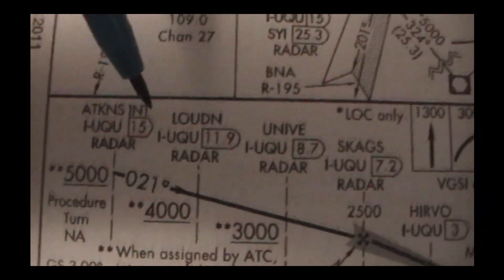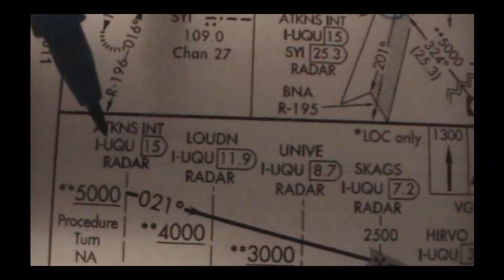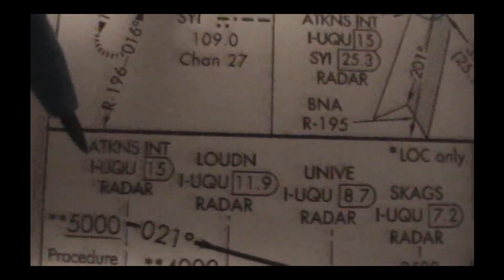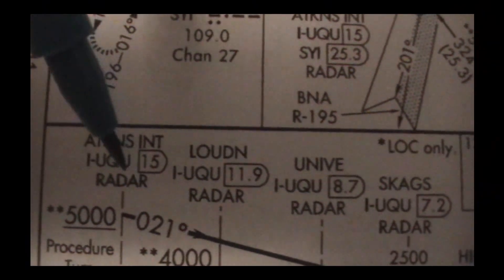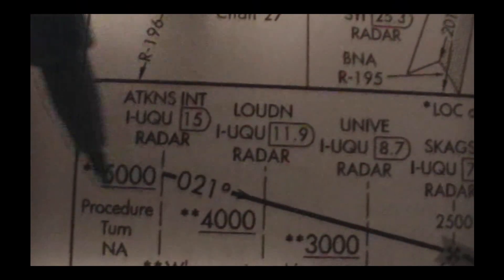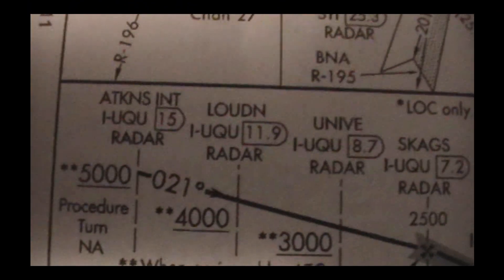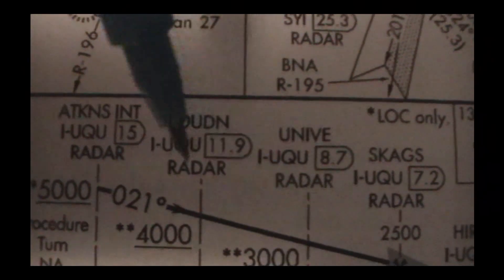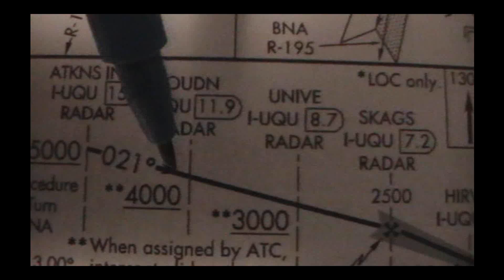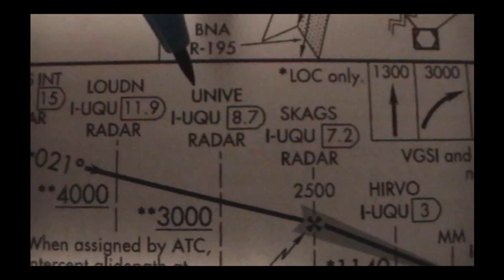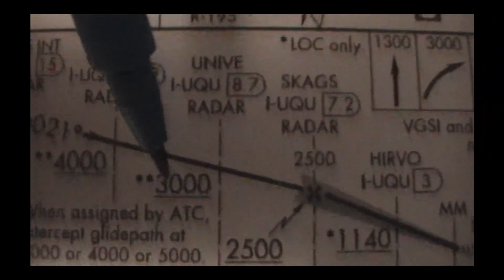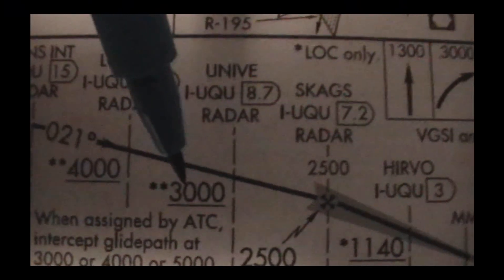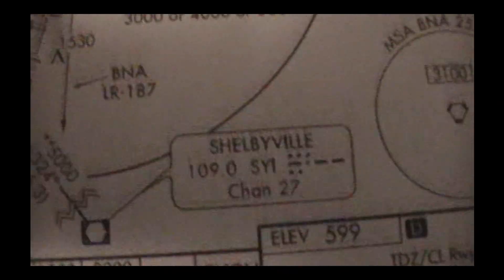The next intersection we have to cross is LOUDN, which is about 11.9 to 12 miles from the airport. The last one, Atkins, is 15 miles away. This gives us plenty of time at a nice altitude for a gentle descent to the runway. A couple miles further we'll be at LOUDN, still on 021 degrees at 4,000 feet. At UNIVE, which is 8.7 miles out, we're going to be at 3,000 feet. As you cross these different intersections, you'll be manually setting your altitude accordingly.